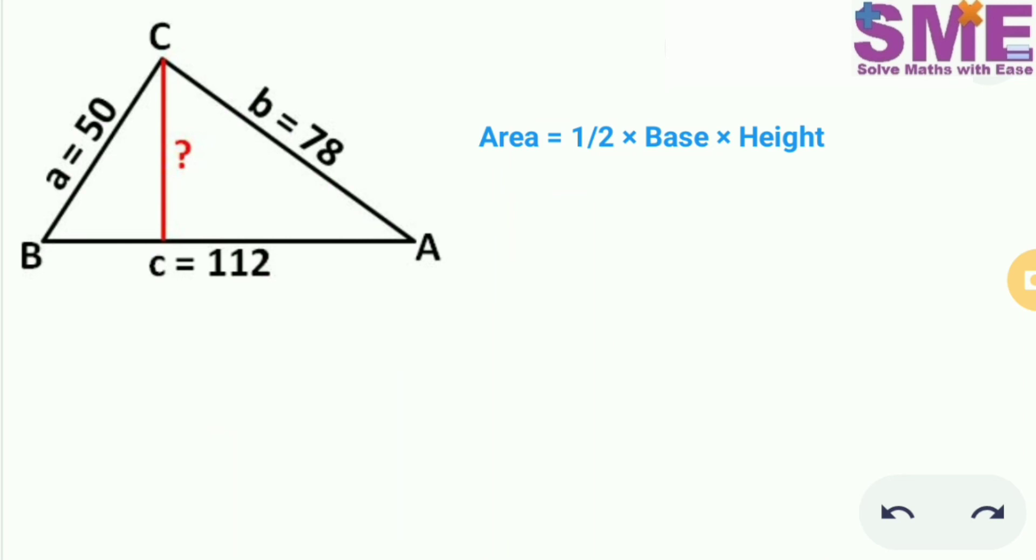Now we need to find the height of this triangle. So we know that the area is equal to half into base into height. So from this we get that the height will be equal to area divided by half of base.